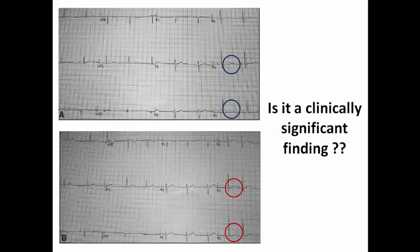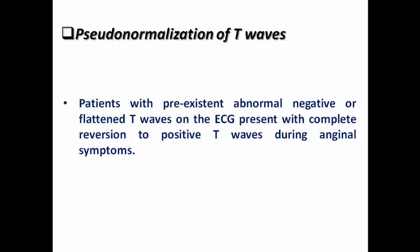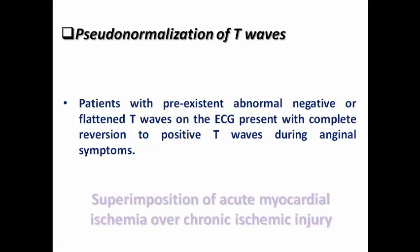So is this a clinically significant finding or not? This is what we call pseudonormalization of T wave. The patient was having pre-existing abnormally negative or flattened T wave in the ECG and then it completely reversed to a positive T wave when he had anginal syndrome. This is the reverse of what we see commonly in clinical practice. He was having T wave inversion or flattened T wave before chest pain in his resting ECG, and when he developed anginal pain, he had positive T wave.